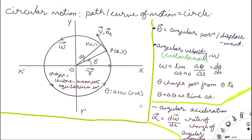The center O is also called the origin, mean position, or equilibrium position, because at this point the net force on the particle is zero, meaning the net acceleration is also zero. The center is the equilibrium position because the net force acting there equals zero.